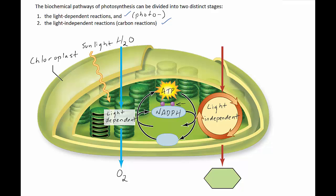The light-independent reactions use ATP and the high-energy electrons in NADPH to convert carbon dioxide into glucose. So the light-independent reactions are actually the synthesis part of photosynthesis, because you're synthesising glucose from carbon dioxide. The ATP and NADPH that fuels the light-independent reactions are produced by the light-dependent reactions, and the carbon dioxide that is synthesised into glucose comes from the atmosphere. So carbon dioxide in the atmosphere diffuses into mesophyll cells and across the membrane of the chloroplast into the stroma where the carbon reactions occur. The light-dependent reactions occur in the thylakoid membrane and the light-independent reactions occur in the stroma.